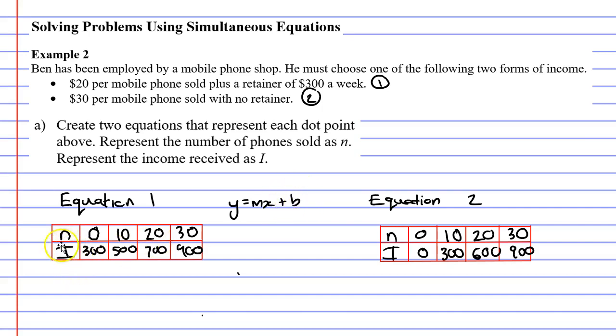Now, remembering that y has become i, so technically it's the i-intercept this time. And what you do is you look in the column where n equals 0. It's usually x equals 0, but in this instance it's n that equals 0. And we can see that i is 300. So that's what b is going to be. b is going to be 300.